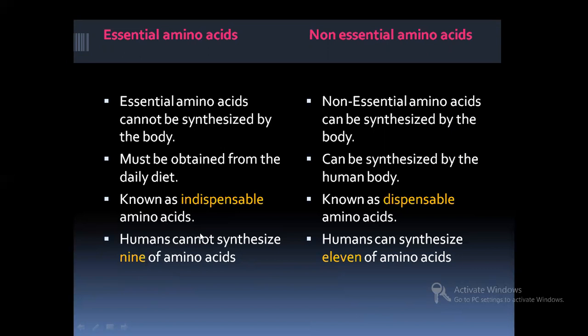Among the 20 amino acids, humans cannot synthesize nine of them. Those nine essential amino acids are histidine, isoleucine, leucine, lysine, methionine, phenylalanine, threonine, tryptophan, and valine. The remaining 11 non-essential amino acids that the human body can produce are alanine, asparagine, aspartic acid, cysteine, glutamic acid, glutamine, glycine, proline, serine, and tyrosine.